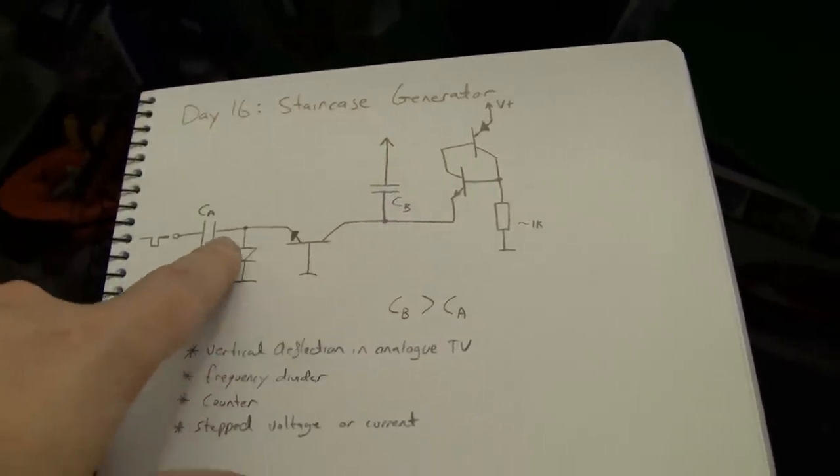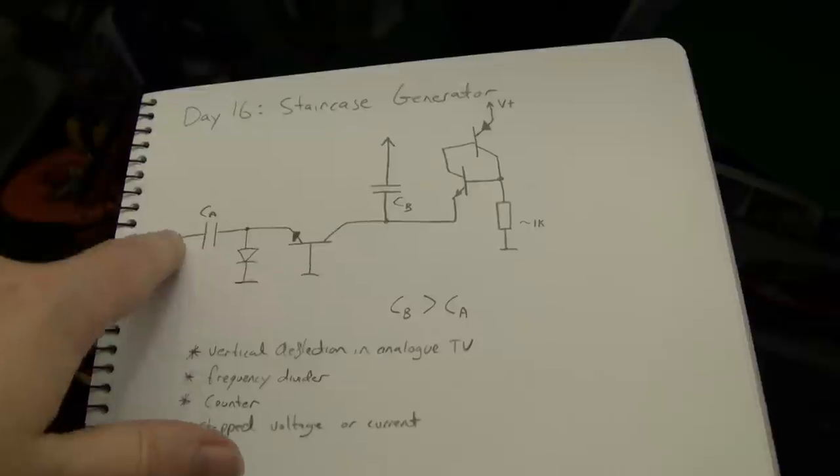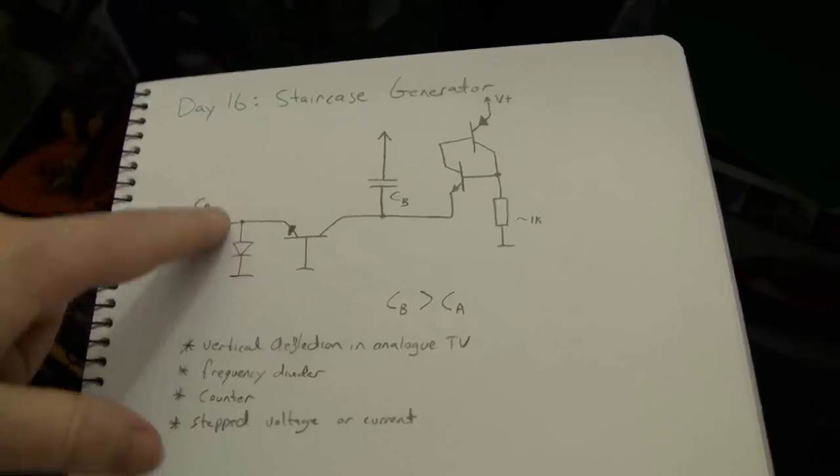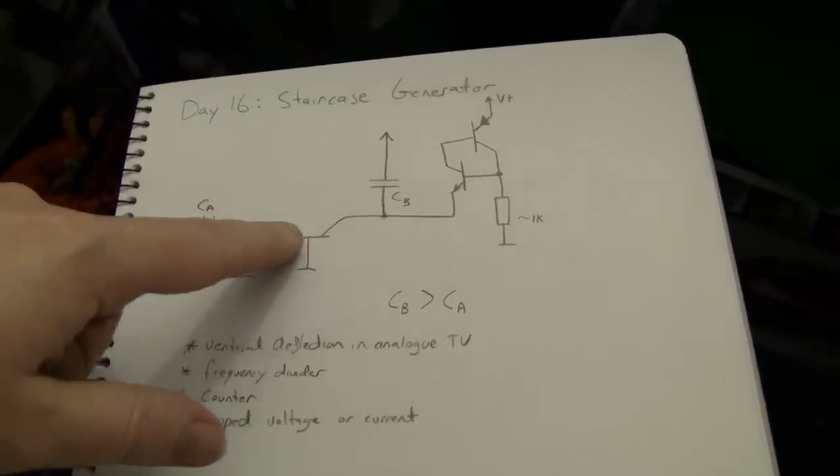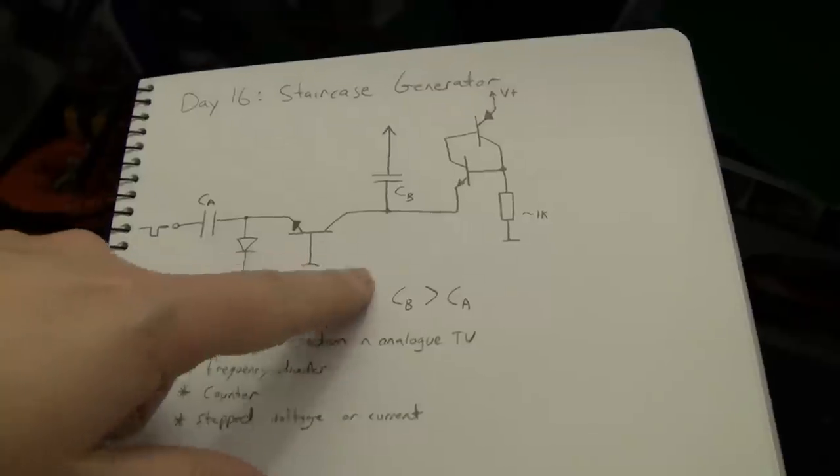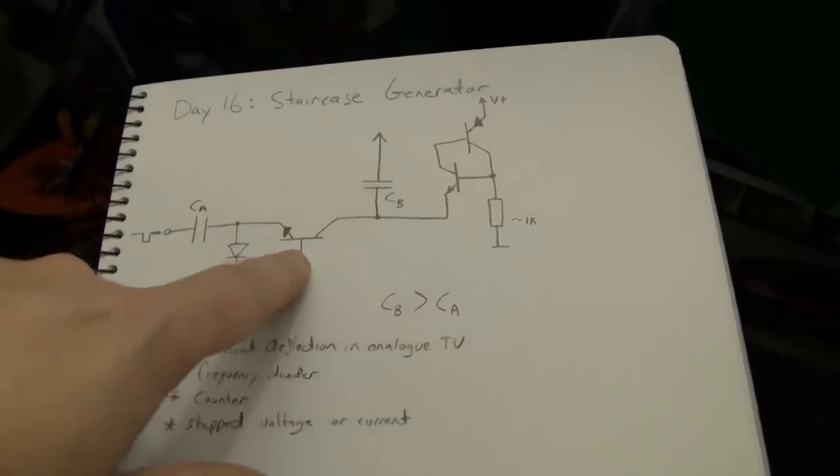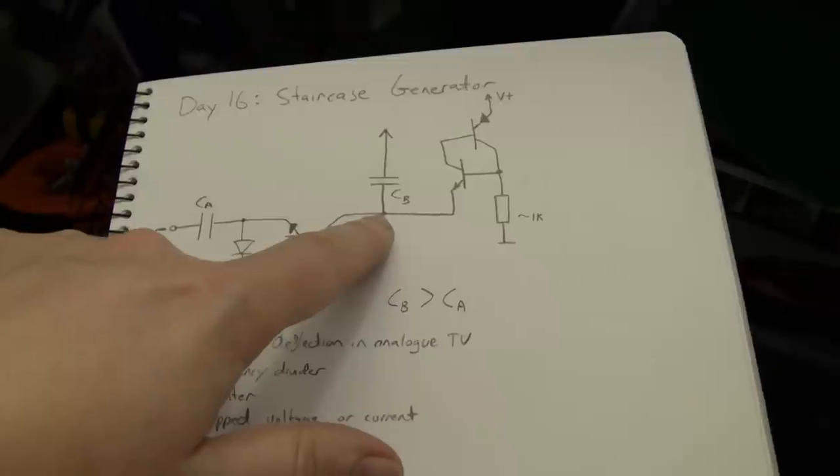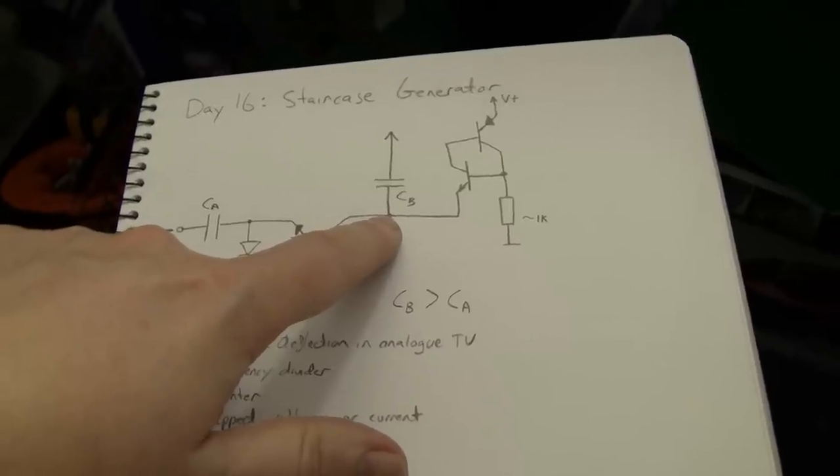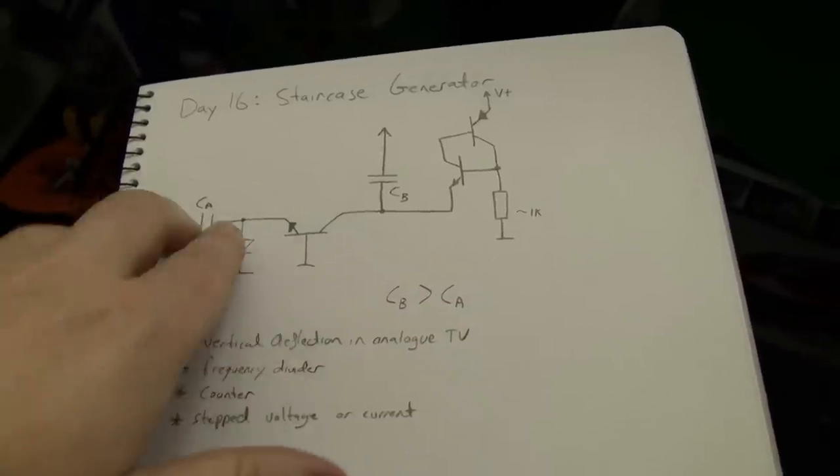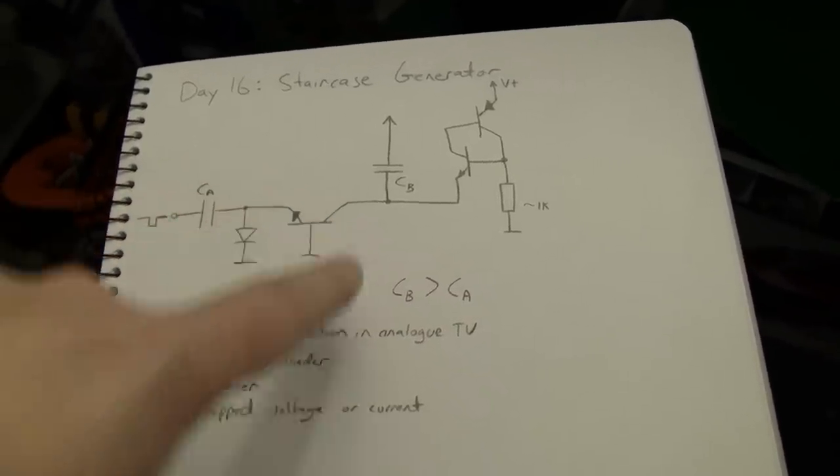So what happens when a negative pulse comes in through CA, it pulls the emitter of this transistor down below its base and it starts to conduct. So the transistor will pull charge through from this capacitor into this capacitor until it's filled up and cuts off this transistor again.